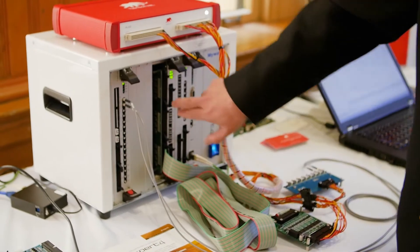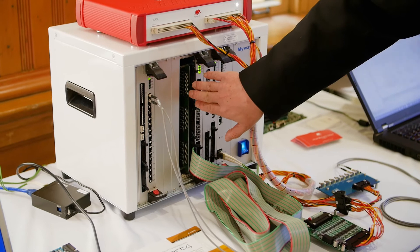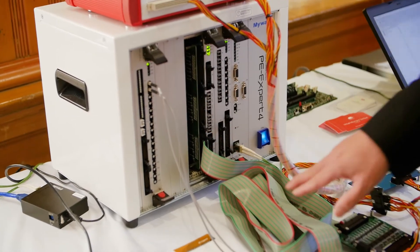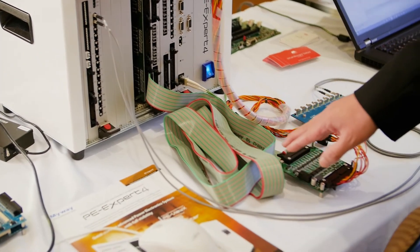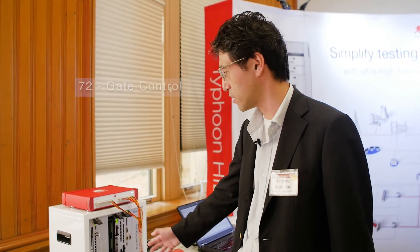So in this demo, this is an FPGA board, one of the optional interface boards, which can control up to 13-level, three-phase multi-level inverter like this. For this demo, just one phase, but you can do up to 72-gate control with this system.